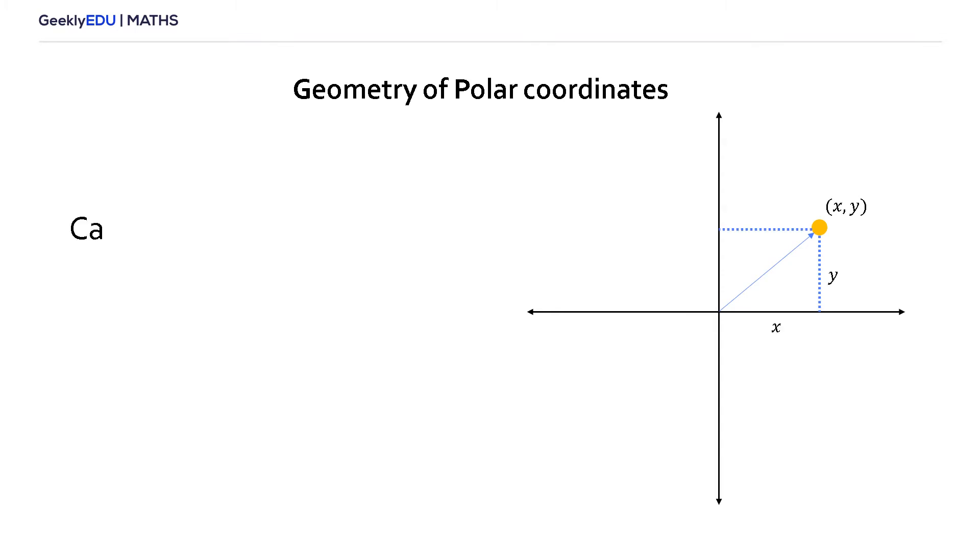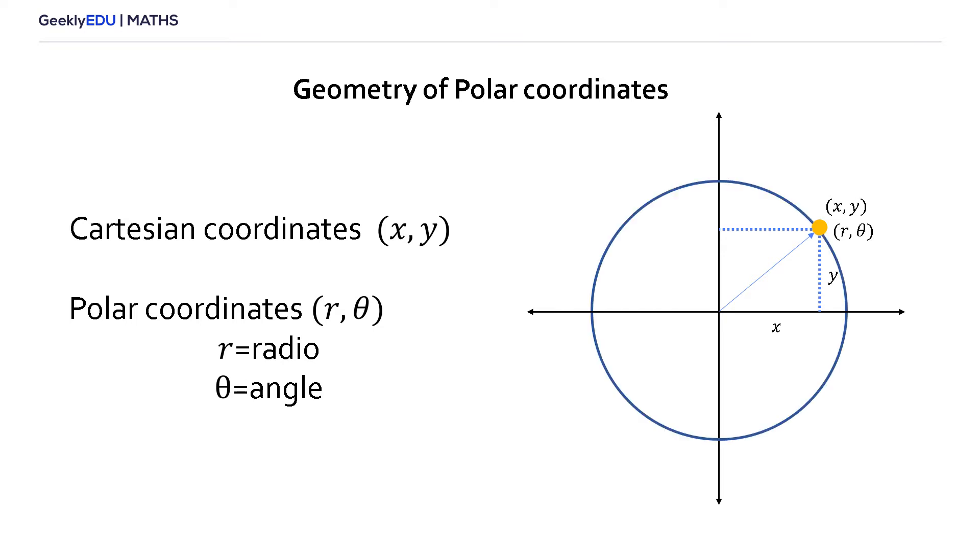Now, when we change from Cartesian coordinates to polar coordinates, we will represent that point in coordinates r and θ, where r is the distance between the origin and the point, and θ is the angle between the axis and the vector.